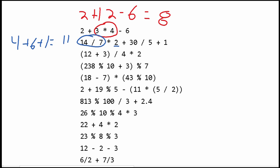Next, we have 12 plus 3 in parentheses, so this gets done first and that's going to be 15. Then we divide by 4. Since it's an integer, we round 15 down to 12, and that gives us 3, which is multiplied by 2, giving us 6 as the answer.